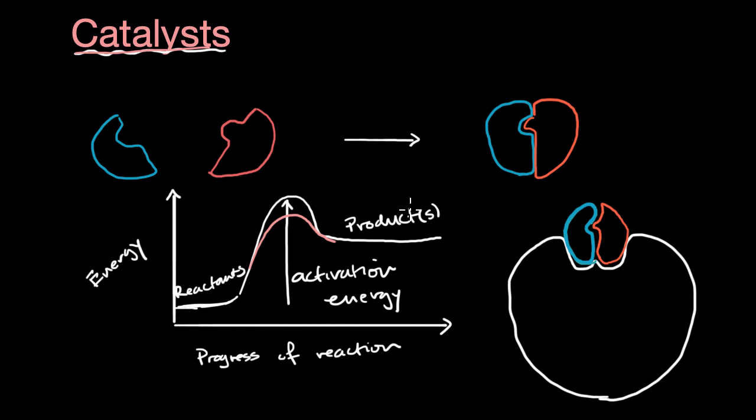But by having catalysts, in this case, an enzyme, it allows the reaction to proceed, in this case, from left to right, without having the energy be so high that it's damaging to the system as a whole. So it's able to have this reaction happen at a lower energy, or in this biological system, at a lower temperature.